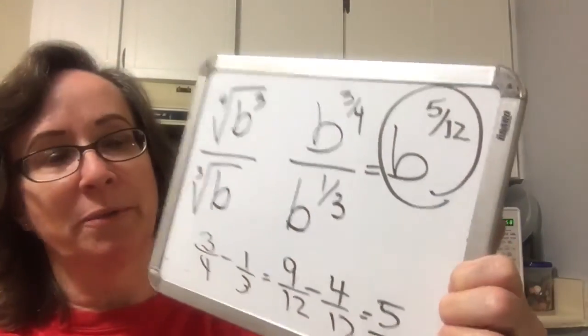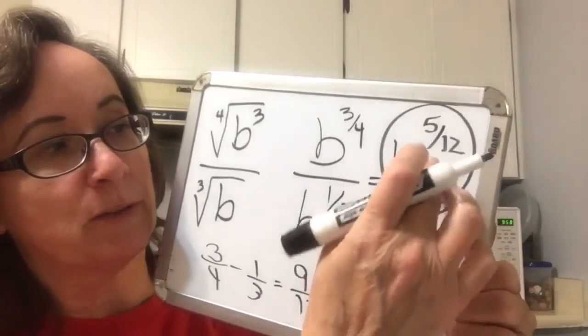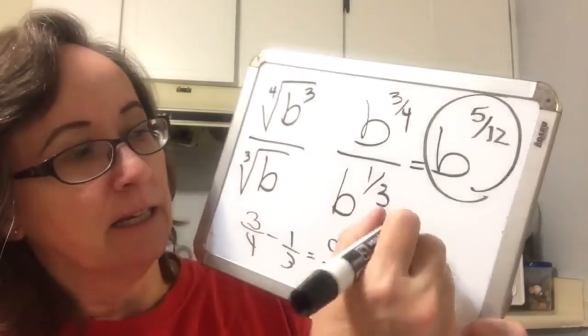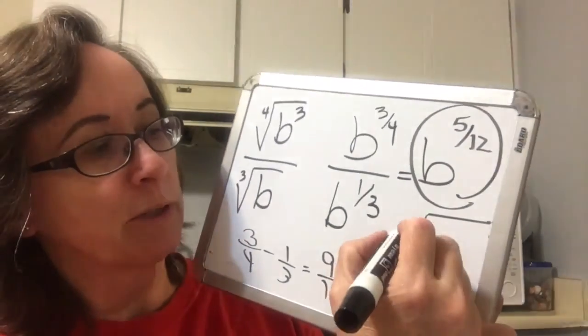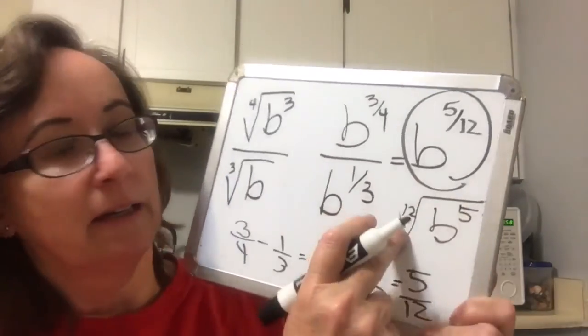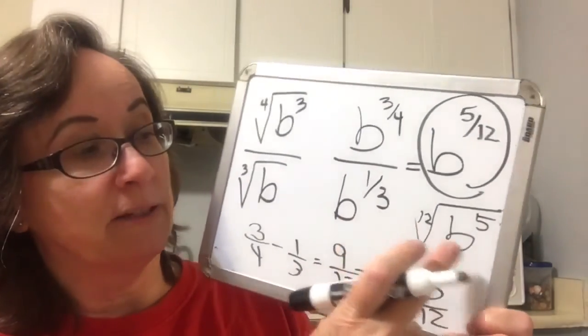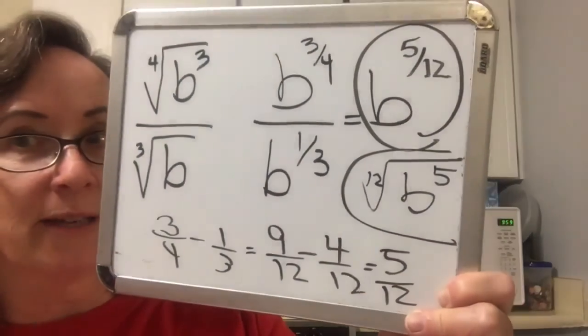That, I do believe, is the end of 9.4. This is Mrs. A, and may God bless you. I only found one boo-boo: this should have been turned back into radical form. So that would have been the 12th root of b to the 5th. I should have turned it back into the radical and I forgot to do so. Now I'm done.